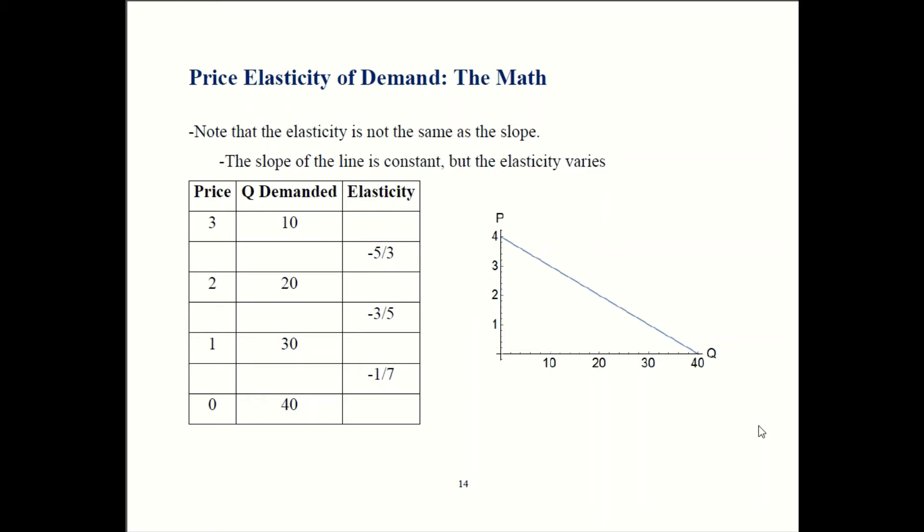Now, to be clear, elasticity is not quite the same thing as slope. So in general, a good that has elastic demand will have a relatively flat slope, but the slope is not the same as the elasticity. So if you grab this demand curve that we just worked with, have price of 3 corresponding to a quantity of 10. That's over here. Price of 2, quantity of 20. Price of 1, quantity of 30. You get this linear demand curve, so the slope is constant. While slope is constant, the elasticity varies. So don't conflate slope and elasticity. They're similar, but they're not the exact same thing.